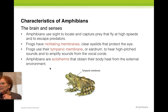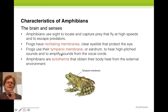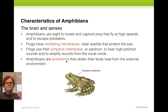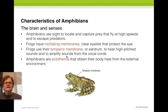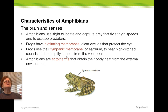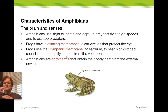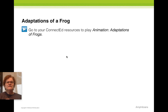Here are some body features: the nictitating membrane and tympanic membrane are related to their brain and senses. The nictitating membrane covers their eyes, and the tympanic membrane is for sensing sound. These are ectotherms, meaning their body temperature is going to be connected to their external environment.